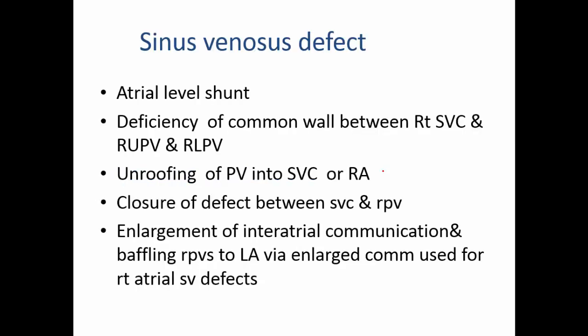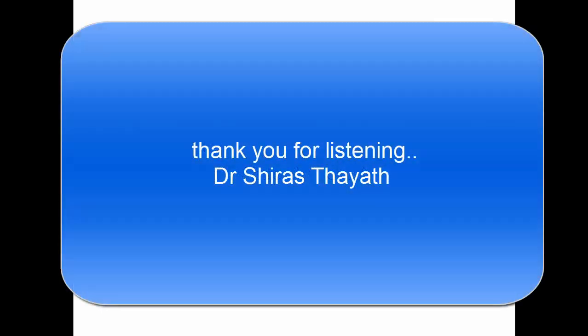Finally, in sinus venosus defect one pulmonary vein drains anomalously into the right side while the rest drain normally — commonly the right upper pulmonary vein draining into the right side. It is usually associated with a sinus venosus atrial septal defect right at the top of the atria. Treatment is surgical: close the defect and reroute the anomalous pulmonary vein back into the left atria. The prognosis is really good. Thank you for listening — I hope this was useful despite being a complicated topic.